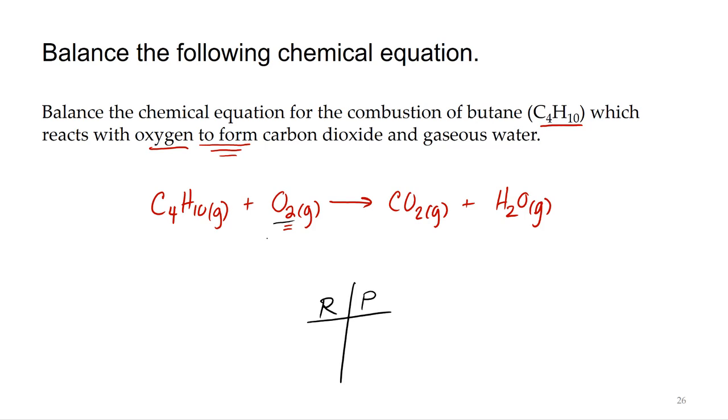Let's start with carbon. On the left side I've got four carbons, on the right side I've only got one, and so that's not balanced. I'm going to correct that by multiplying this carbon on the product side by four. I'm going to put the coefficient of four in front of CO2.